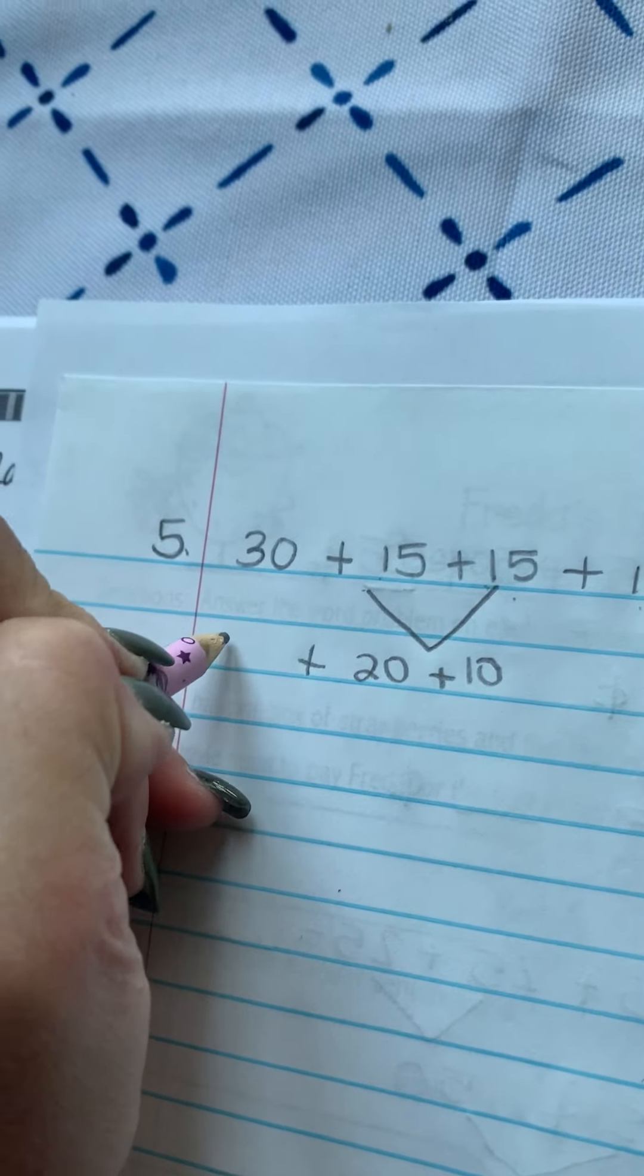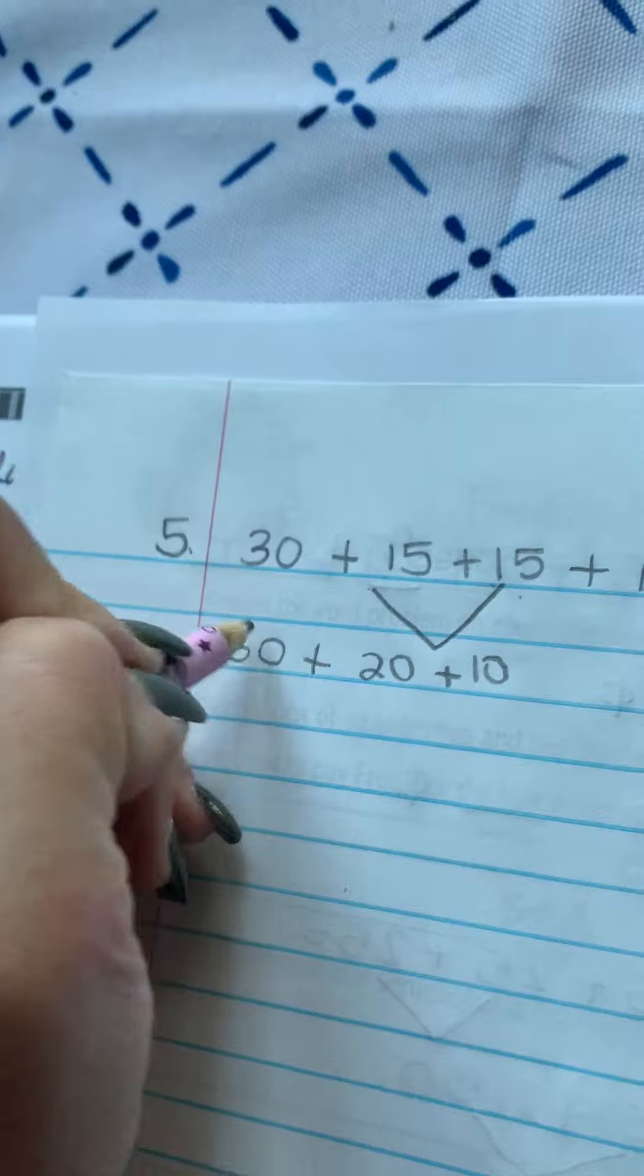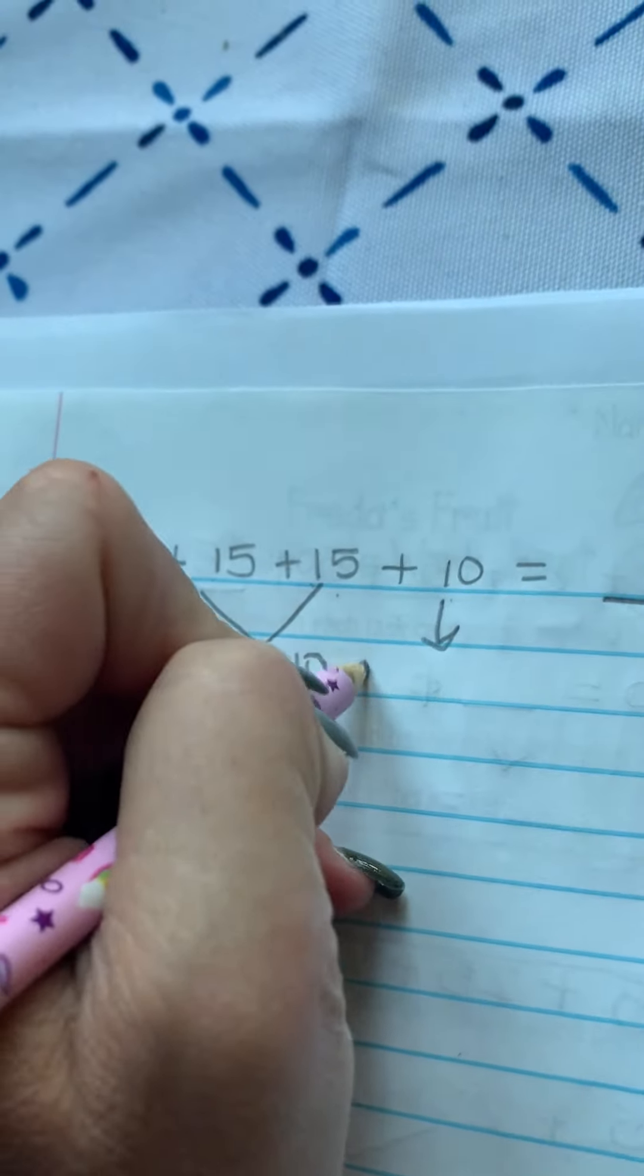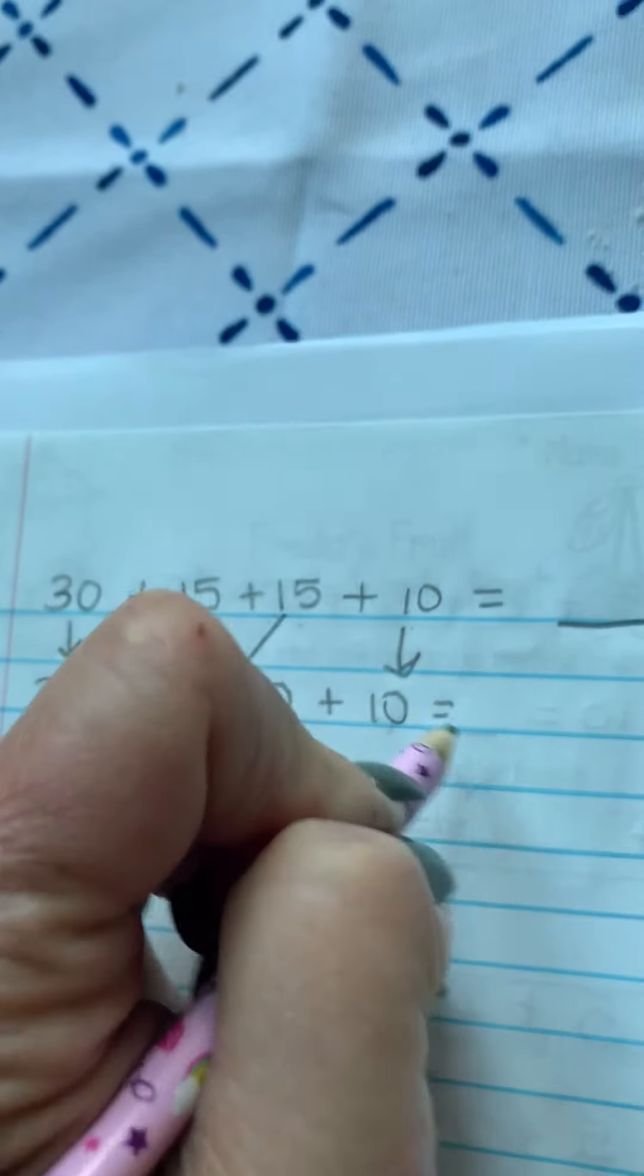So today we're looking at Freda's fruit number five. Andrea Apple has one box of raspberries, two apples, and one orange in her basket.